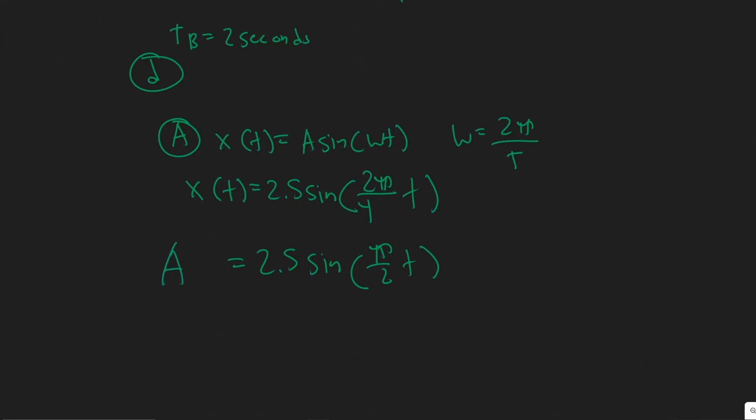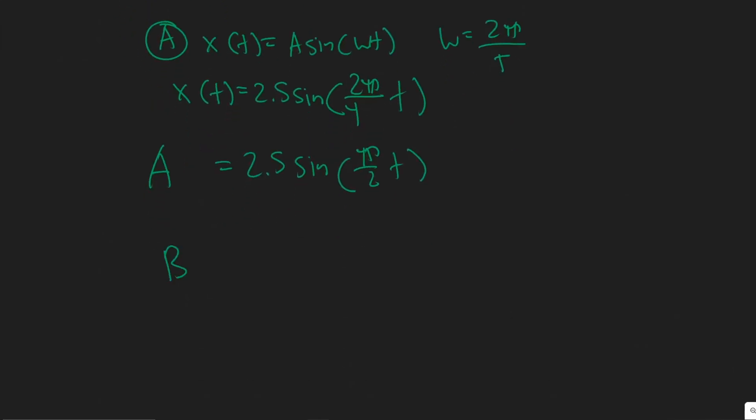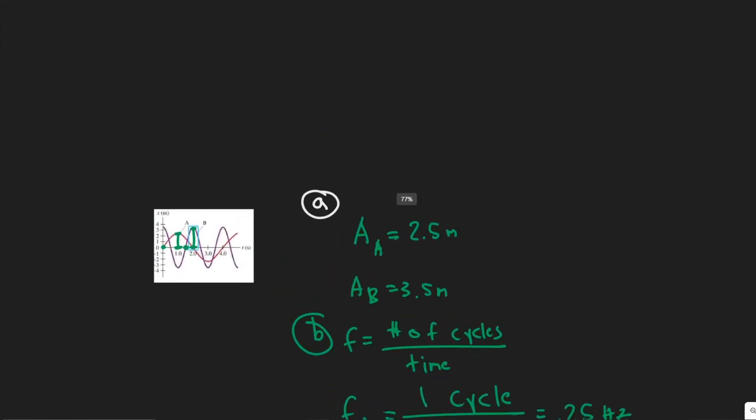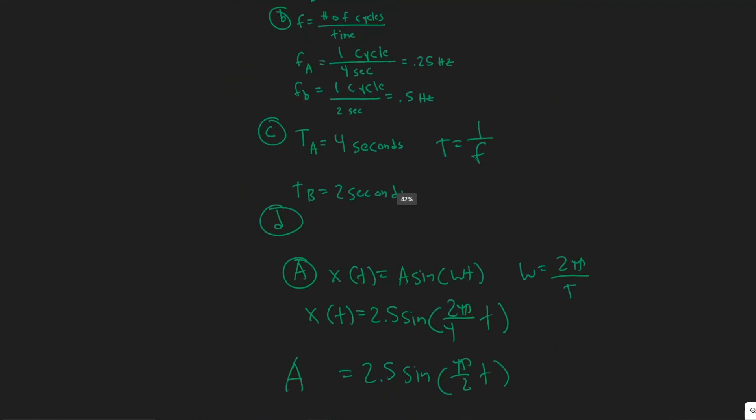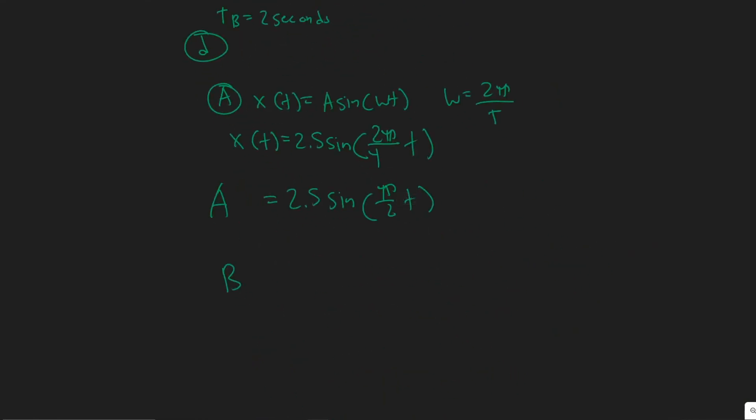Now let's move on to B. So for B, the curve looks more like cosine because I know cosine starts at the top and then goes down. So we're going to use cosine for this one. So it's just X(t) equals A cosine of omega t. So the only thing that changes is your trig function.